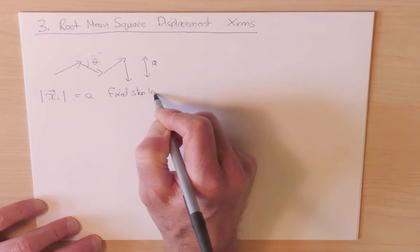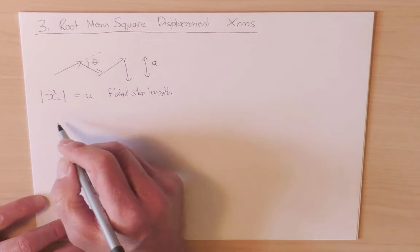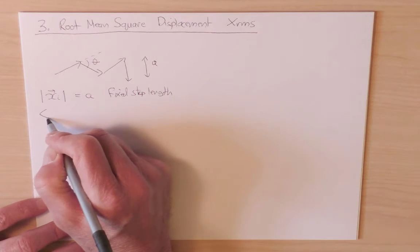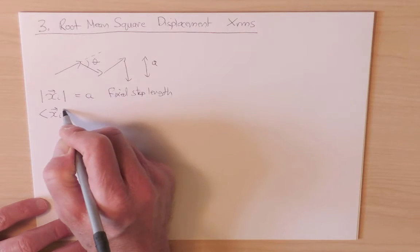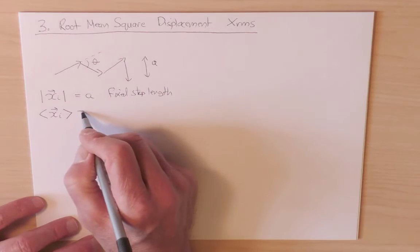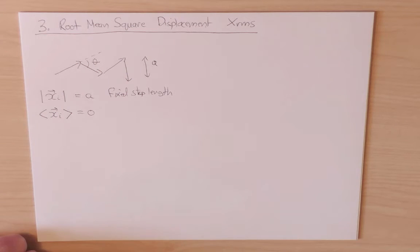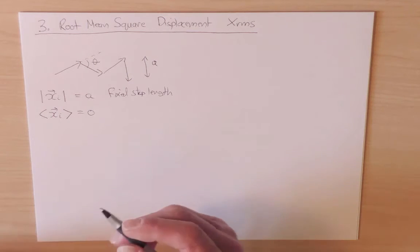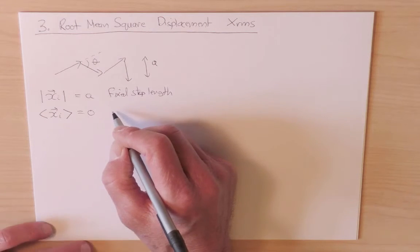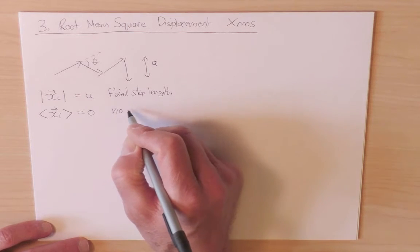Also there's no bias in the walk, and so the average value of each individual displacement, X_i, is equal to zero. So here angle bracket is meant to denote average over all possible realizations of the walk, or all possible realizations of a single step. So this is the statement that there's no bias.